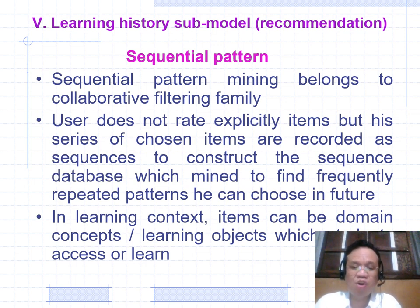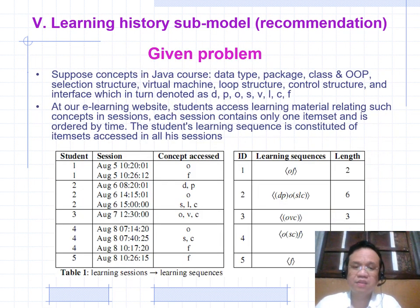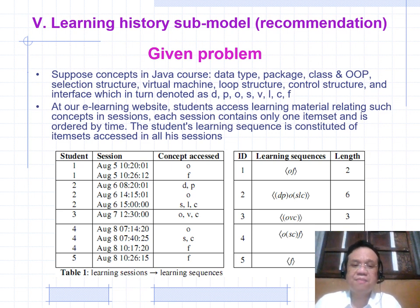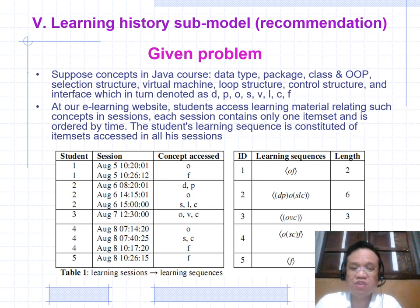In the learning context, items can be domain concepts or learning objects. For example, in a Java course: data type, package, class, OOP, solution structure, virtual machine, control structure, and interface — denoted D, P, O, S, V, L, C, F. At the learning website, students access learning material related to sub-concepts in sessions. Each session contains one item set ordered by time; the student learning sequence is a sequence of item sets accepted across all sessions.